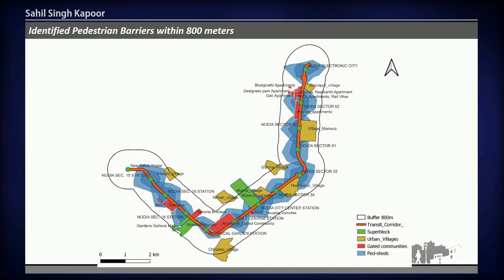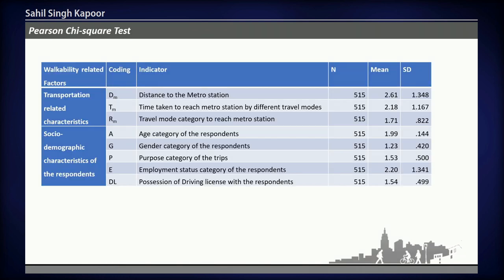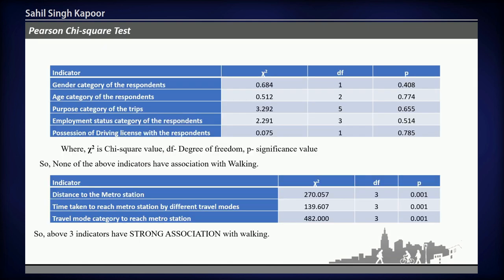Lastly, I have been able to delineate all identified major pedestrian barriers in GIS. I used the IPCA — Impedance Pedestrian Catchment Area — and deducted the actual pedestrian barrier areas from it. I then identified associations using a Pearson chi-square test, and it was realized that socio-demographic characteristics had no association with walking. However, distance to the metro station, time taken, and travel mode category had a strong association with walking. Thank you.